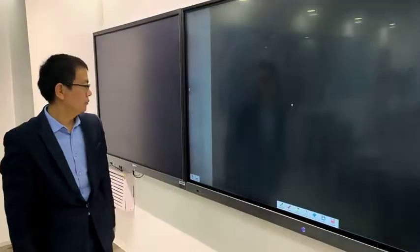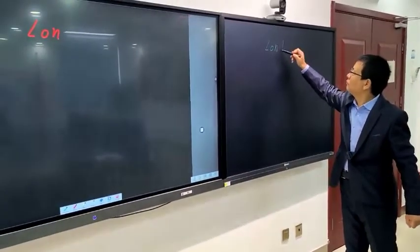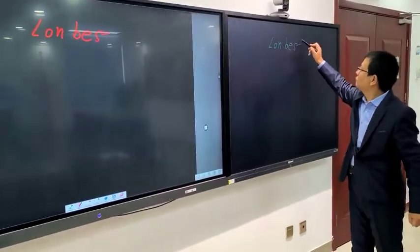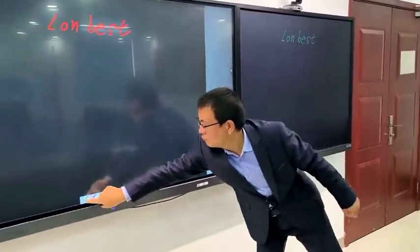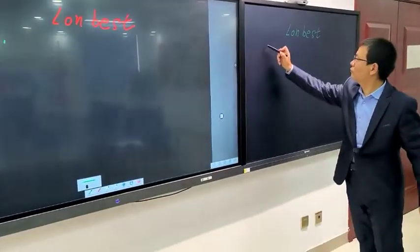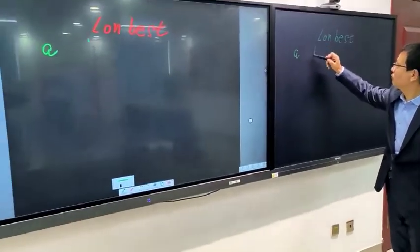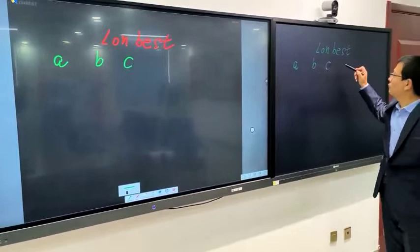When we double click the software icon, we enter into the software window. And when we write words on electronic blackboard, the writings would be synchronously displayed on the software window.